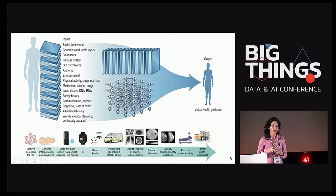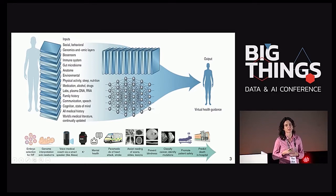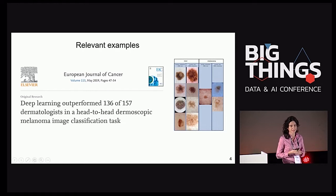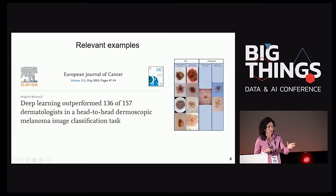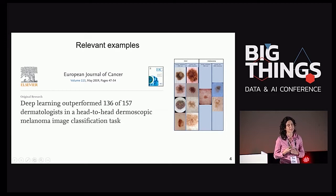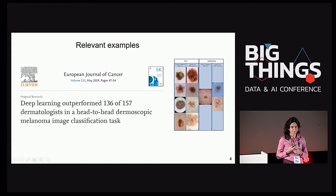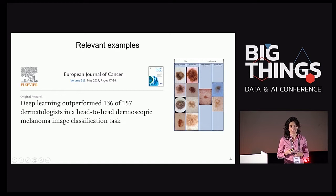Quisiera explicar unos ejemplos representativos de cómo se está integrando la IA en la práctica clínica. He escogido artículos de revistas con impacto. El primero, del European Journal of Cancer, donde se valida — y la palabra validar es muy importante en medicina — un modelo ya entrenado en el que los dermatólogos se comparan frente a un clasificador de melanoma con imágenes dermatoscópicas, y se confirma la superioridad en la predicción de malignidad versus benignidad de lesiones sospechosas de melanoma.